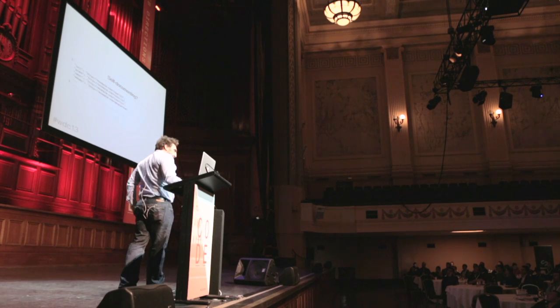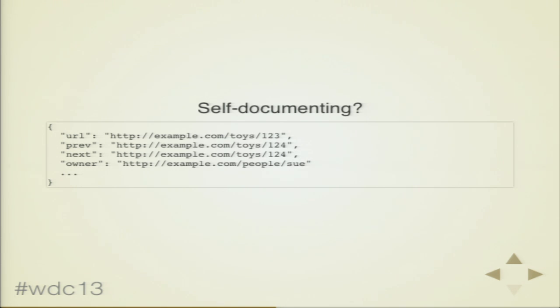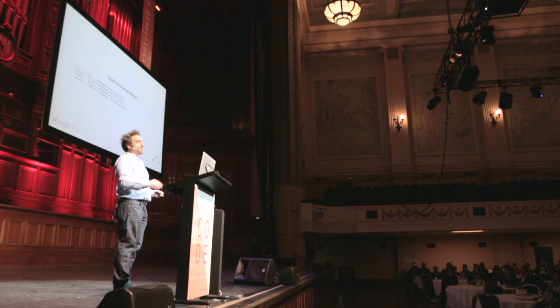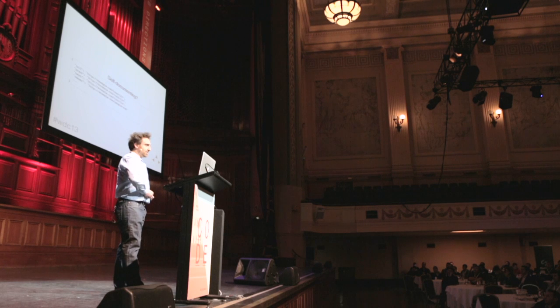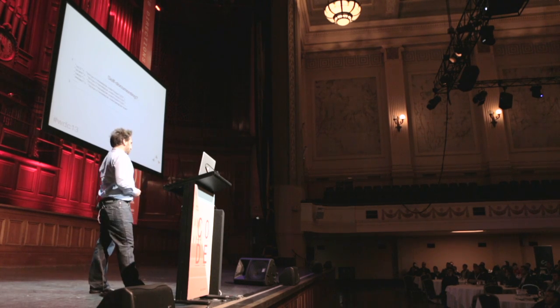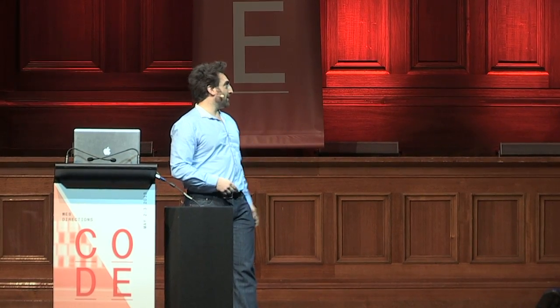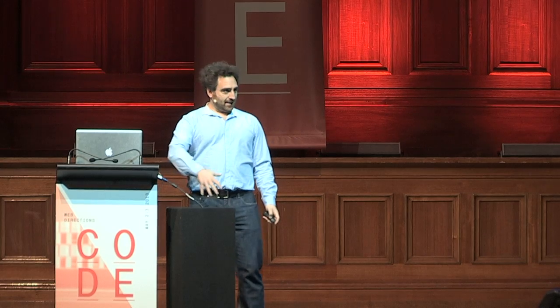Another point about responses beyond the response code is what do you actually send back? If you're writing an API, there is this argument that you should be sending back self-documenting responses. So instead of sending back just owner ID 47, you send owner as a full URL like example.com/people/sue. It's called HATEOAS — it's a really bad acronym — and it's starting to gain some momentum. It makes your APIs more self-documenting and easier for the developer to navigate to the next call.